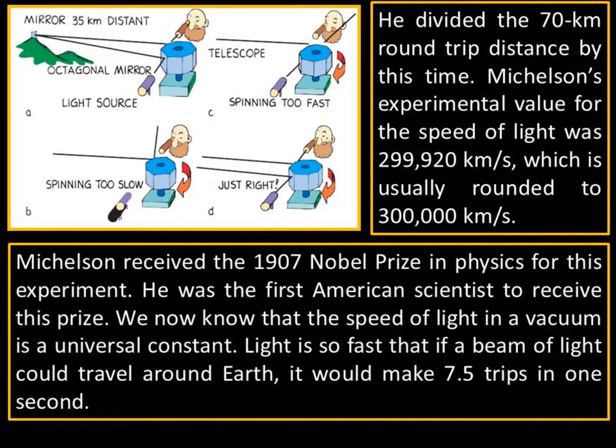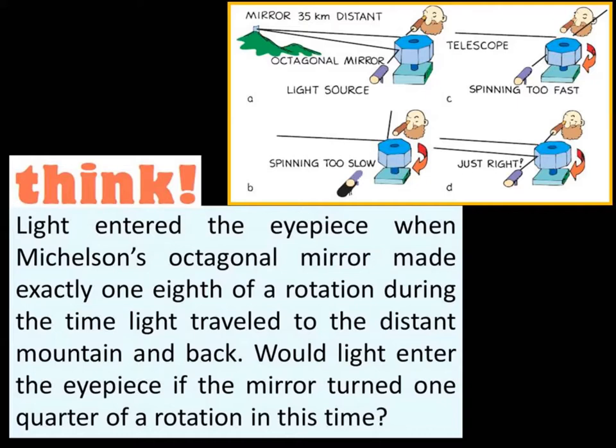If the rotating mirror made exactly one eighth rotation in the time the mirror made the trip to the distant mountain and back, the mirror was in position to reflect light to the observer. If the mirror was rotated too slowly or too quickly, it would not be in a position to reflect light. Michelson knew that the time for the light to make the round trip and the time for the octagonal mirror to make one eighth of a rotation was the same. He divided the 70 kilometer round trip distance by this time.